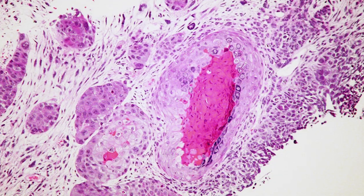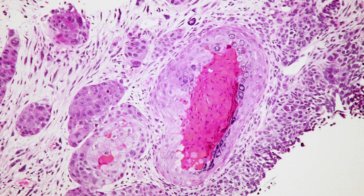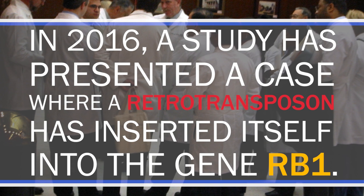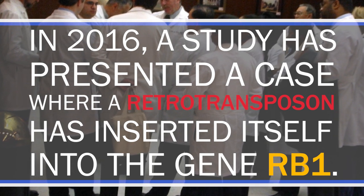Indeed, many different types of cancer have been associated with the activation of transposons. This includes lung, colon, eye, or ovarian cancer. In 2016, a study presented a case where a retrotransposon inserted itself into the gene RB1. RB1 is a tumor suppressor gene and its disruption is associated with an aggressive form of eye cancer called retinoblastoma.